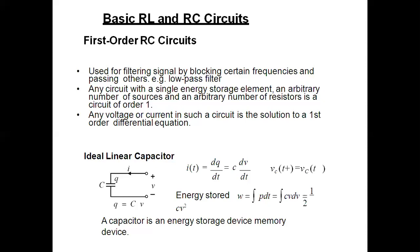What is a circuit of order 1? Any circuit with a single energy storage element — meaning either a capacitor or an inductor — along with an arbitrary number of sources and resistors is a first order circuit. For an RC or RL circuit, the energy storage elements are L and C. If there is only one capacitor in the circuit, it is an energy storage element of order 1. Any voltage or current in such a circuit is a solution to a first order differential equation.